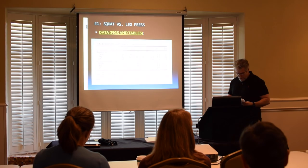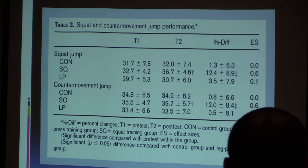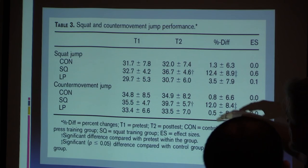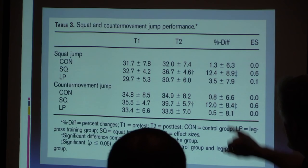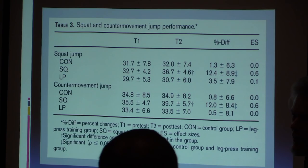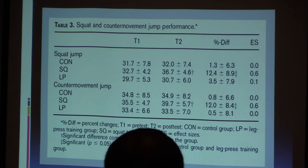You went to the effect sizes and the percent differences — good for you. Let's go to the part that's hard to read. Let's just look at the percent differences here. What do we see? We see 1.3 plus or minus 6.3, 12.4 plus or minus 8.9, 3.5 plus or minus 7.9. What is it with this plus or minus stuff? It's a huge spread. What do we call these spreads?